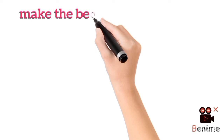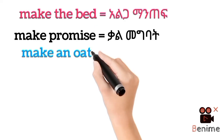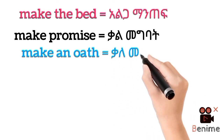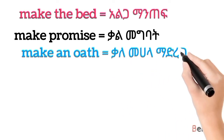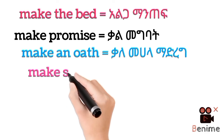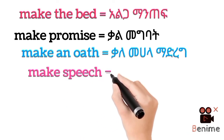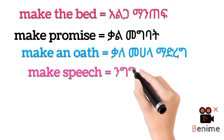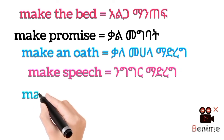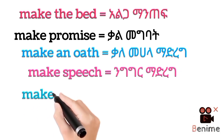Make has got a lot of meanings in English. You can use 'make' to say 'make a promise' — the opposite is 'break a promise.' You can also say 'make an oath,' 'make a speech.' For example: the prime minister made a long speech.